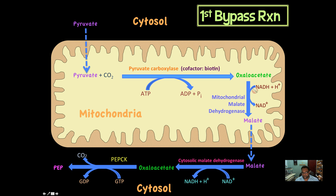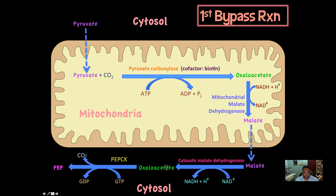Be careful when drawing this diagram — show the cofactor conversions. Remember: NADH plus H+ goes to NAD+ in a reduction reaction, and NAD+ goes to NADH plus H+ in an oxidation reaction. Once you have the oxaloacetate in the cytosol, PEPCK — phosphoenolpyruvate carboxykinase — converts oxaloacetate to phosphoenolpyruvate. CO2 is removed and GTP is converted to GDP.